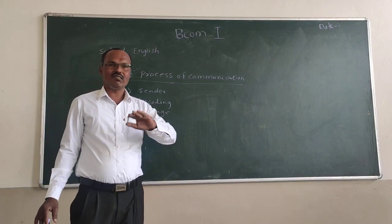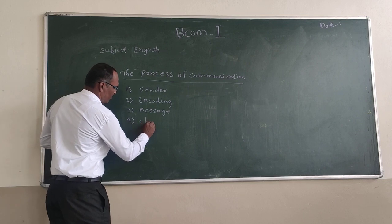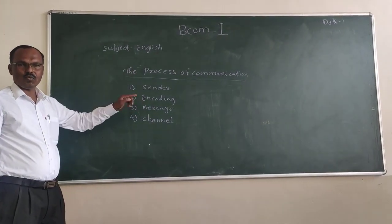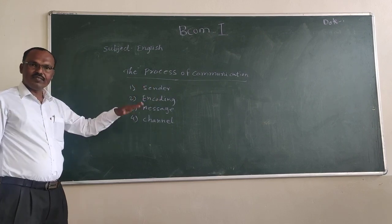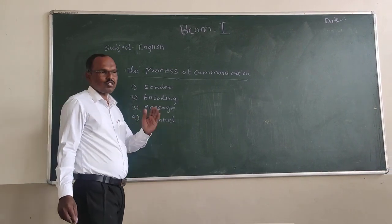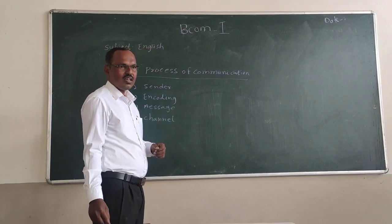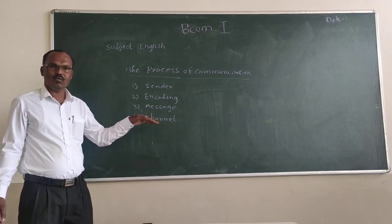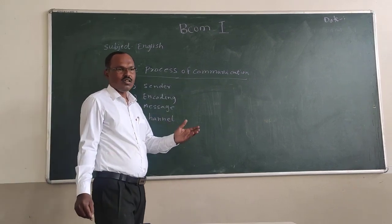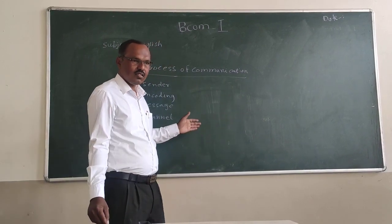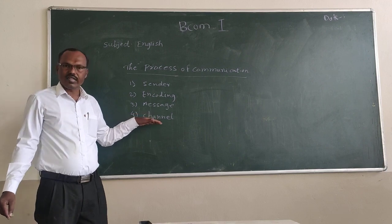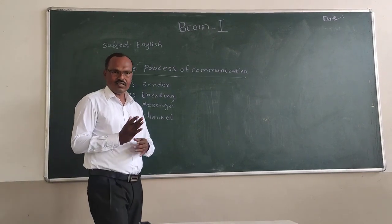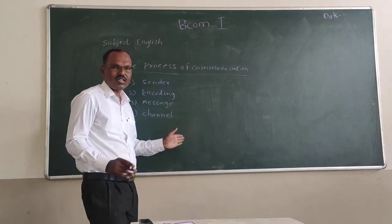The fourth step, which is very important, is channel. The sender has decided what he wants to share with the receiver and has formed a message. Now he wants to decide by which channel to convey the message to the receiver. The channel means the way or medium of communication — he can use verbal communication, non-verbal communication, networking, or written forms of communication. The sender can decide which channel to use, so channel is the fourth important aspect of communication.